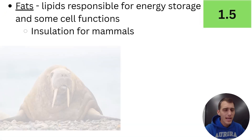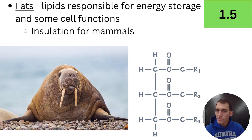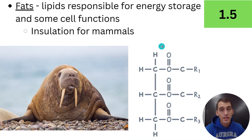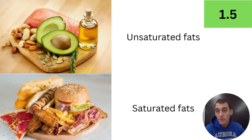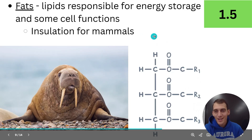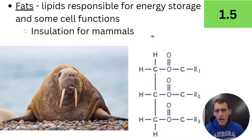Fatty acids are a monomer — not the monomer of lipids, but a monomer. If you take three of these fatty acids and attach them to a molecule called glycerol, you get something called a triglyceride, which is a lipid responsible for energy storage and some other cellular functions. So these are fats. Unsaturated fats are fat molecules — triglycerides — that have an unsaturated fatty acid, while saturated fats are fats that don't have unsaturated fatty acids. Here are three fatty acids represented by these R groups. They're responsible for energy storage, and in some mammals they provide insulation — like the walrus, who has blubber to help keep warm. But the main function is energy storage.